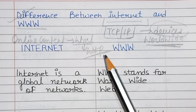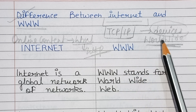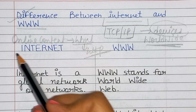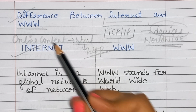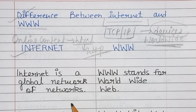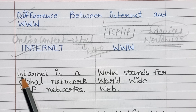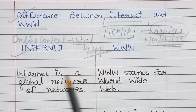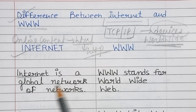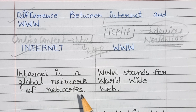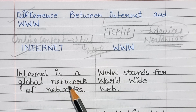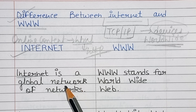Let's start with the difference between them. First difference: internet is a global network of networks — a global system of interconnecting computer networks.